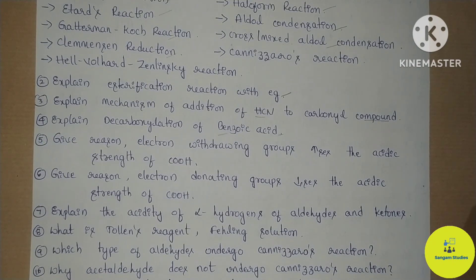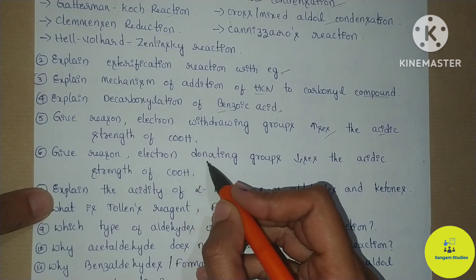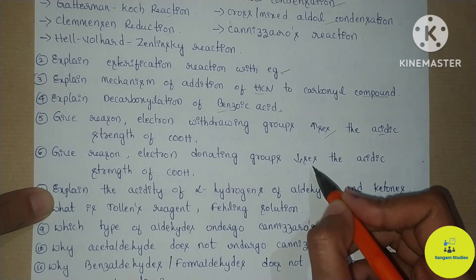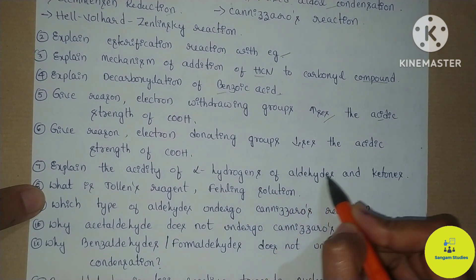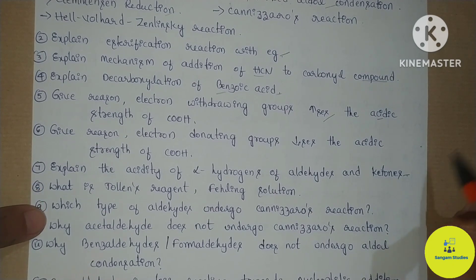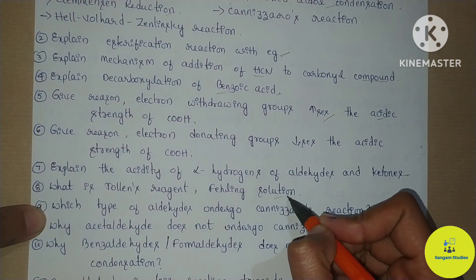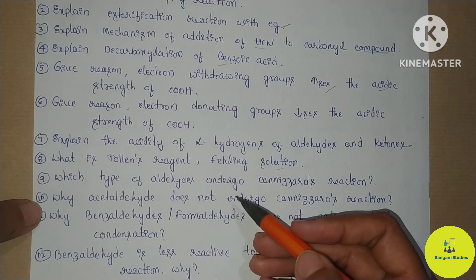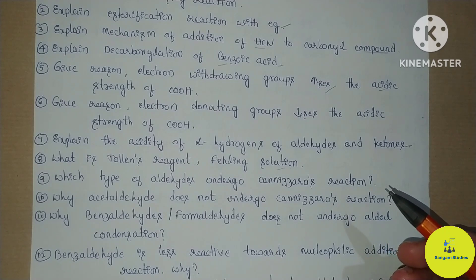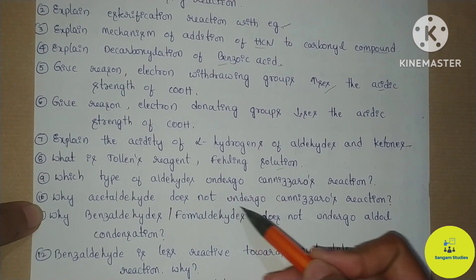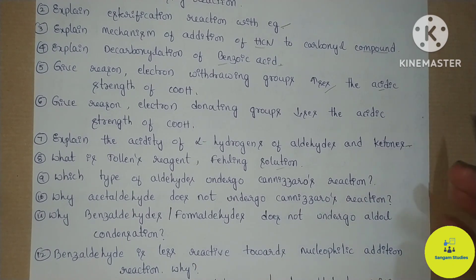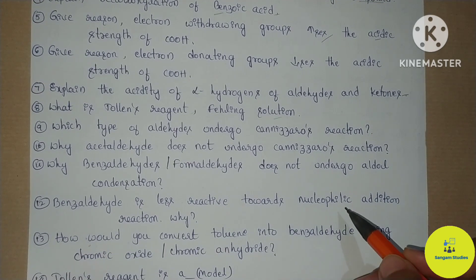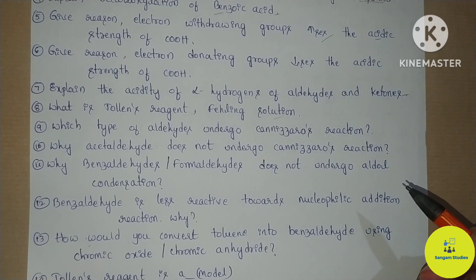The next question is a give-reason type. Electron withdrawing groups increase the acidic properties of carboxylic acid. Electron donating groups decrease the acidic strength of carboxylic acid. This has a chance of being a 1-mark question. Acidity of alpha-hydrogens of aldehydes and ketones is also covered. Which type of aldehydes undergo Cannizzaro reaction? Why does acetaldehyde not undergo Cannizzaro reaction? Benzaldehyde is less reactive towards nucleophilic addition reaction — these are all give-reason type questions.